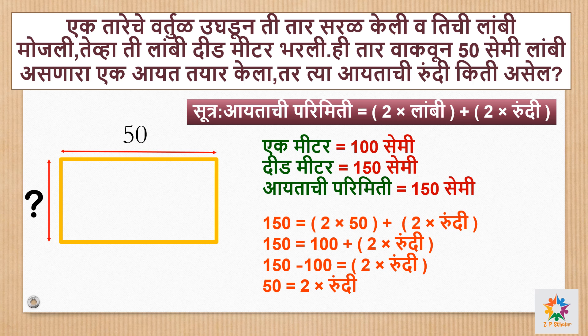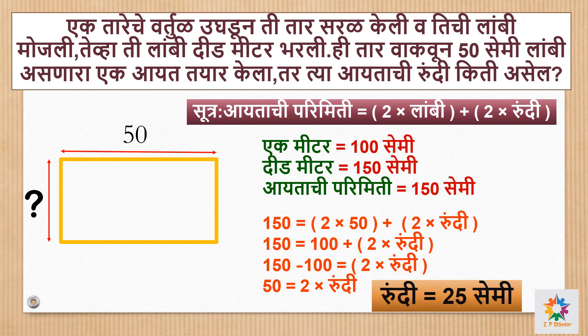या ठेकाने आपल्याला आयताची लांबी दिलेली आहे. परिमिती आपण काढायची म्हणजे आयताची परिमिती - सूत्राचा उपयोग करूशकतो. आयताची परिमिती बरोबर 2 गुणिले लांबी अधिक 2 गुणिले रुंदी. जे आपण कळायचे ते रुंदी - 150 बरोबर शंभर अधिक 2 गुणिले रुंदी. म्हणजेच 15 वजा शंभर बरोबर 2 गुणिले रुंदी. 2 ने भागले तर आपल्याला रुंदी मिळणार - रुंदी बरोबर 25 सेंटिमीटर.